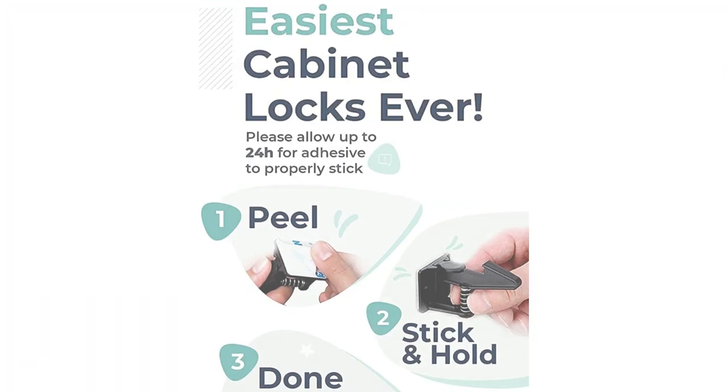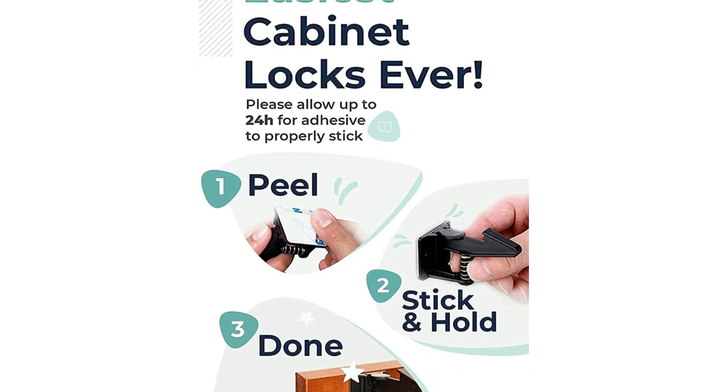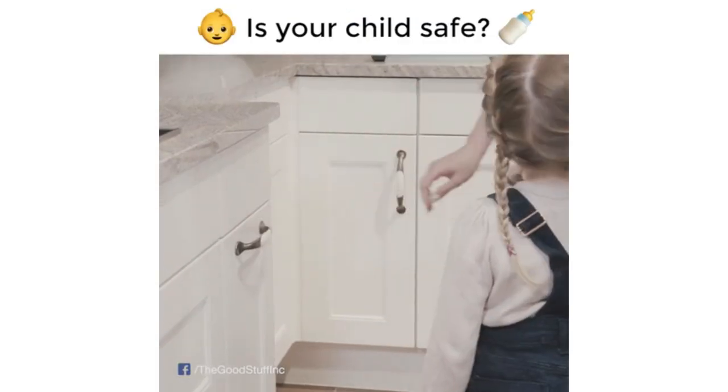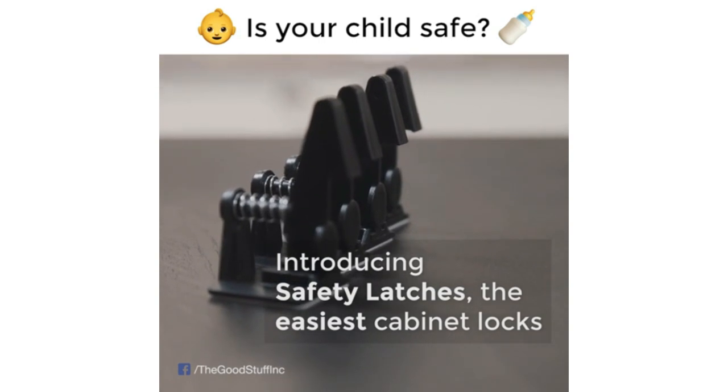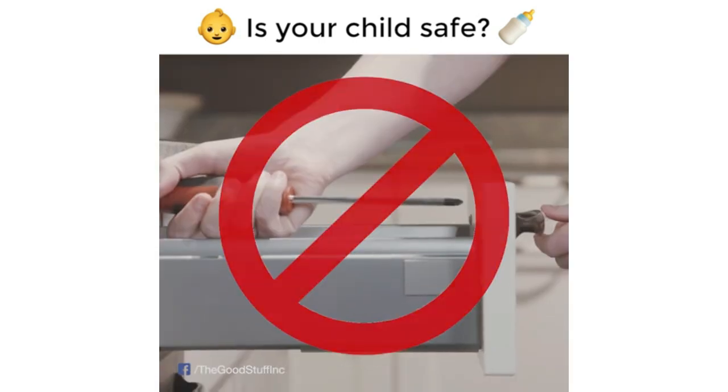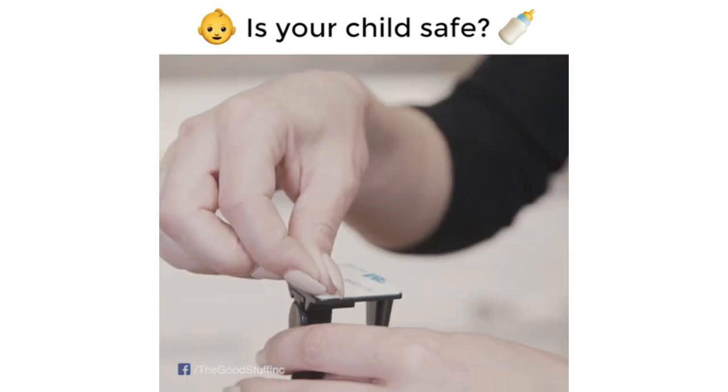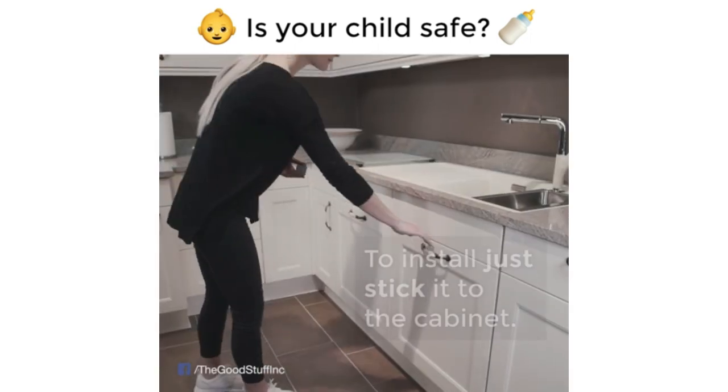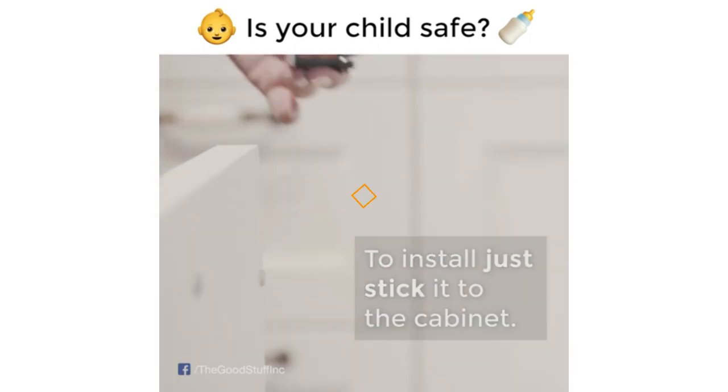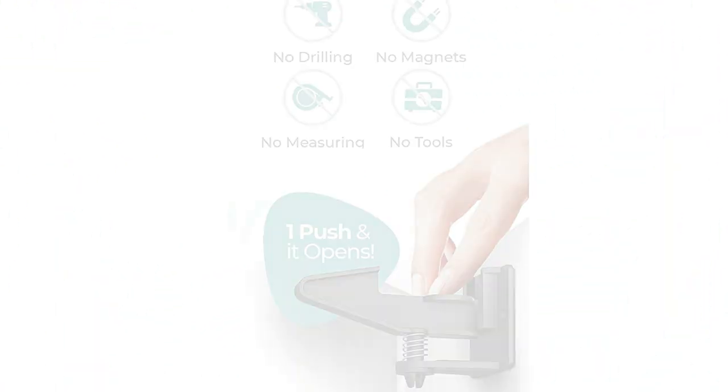But they can't be used on refrigerators or toilets, so if you're looking for a one-stop baby-proofing solution, this isn't it. Designed to keep your toddler safe from harm, these self-adhesive child-proof cabinet latches make baby-proofing cabinets simple. Just peel off the backing and the super-strong 3M adhesive fixes these child locks to cabinets and drawers in seconds.